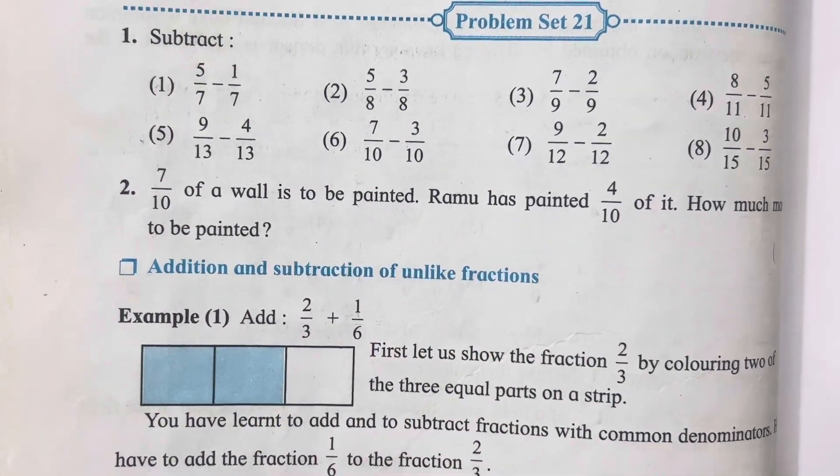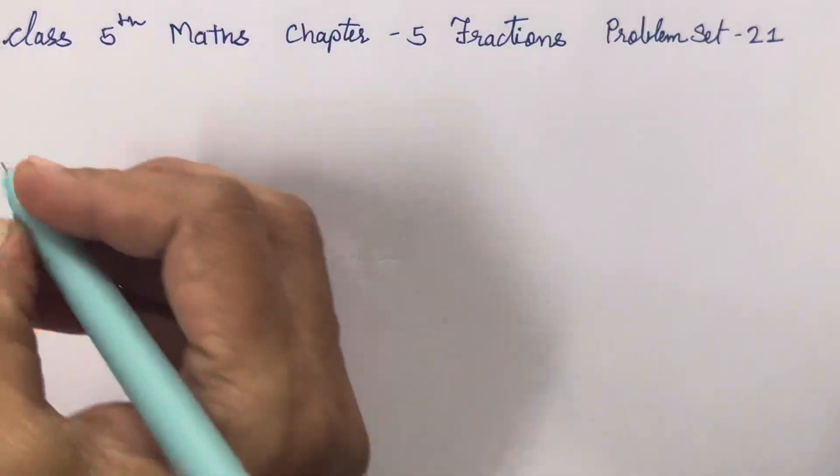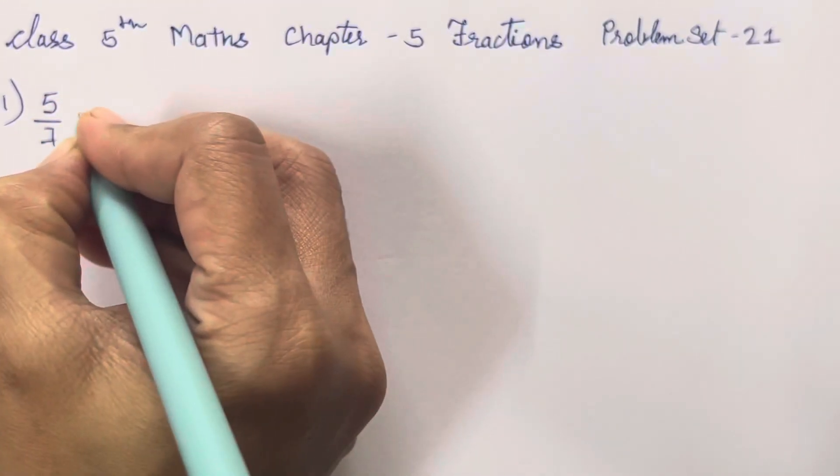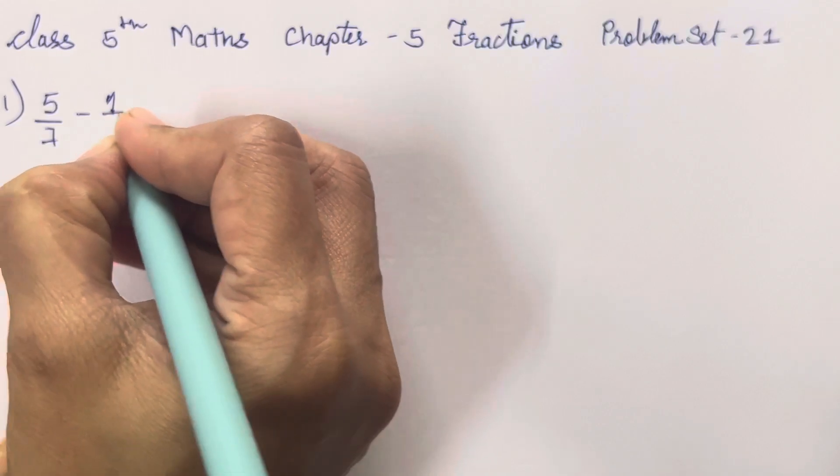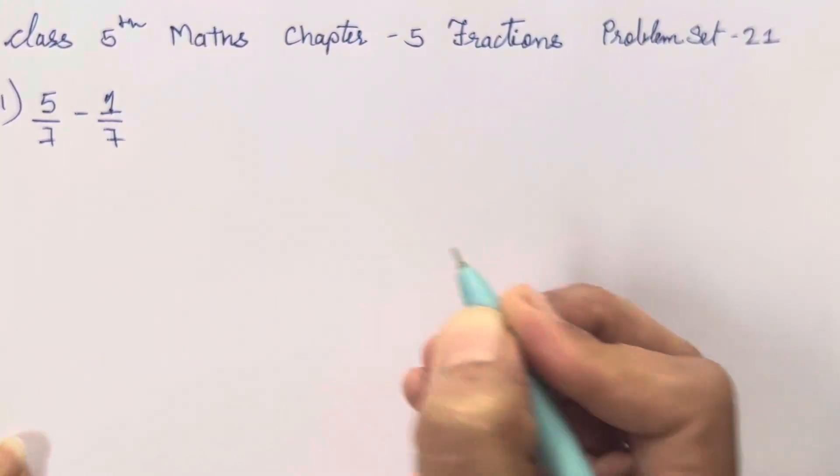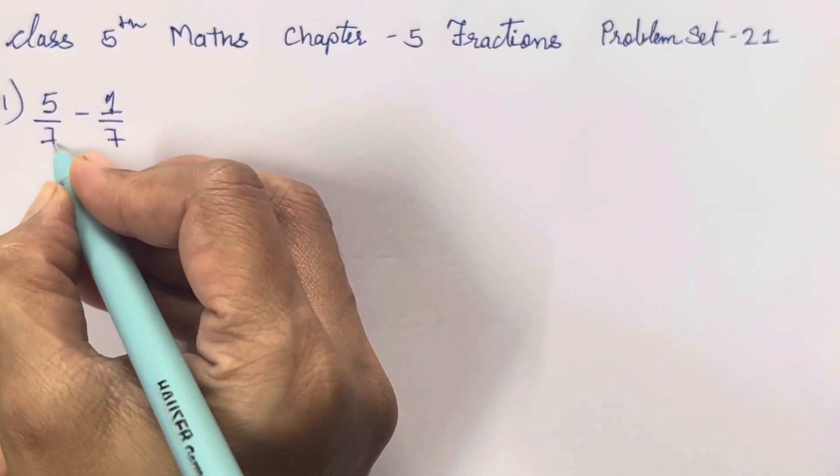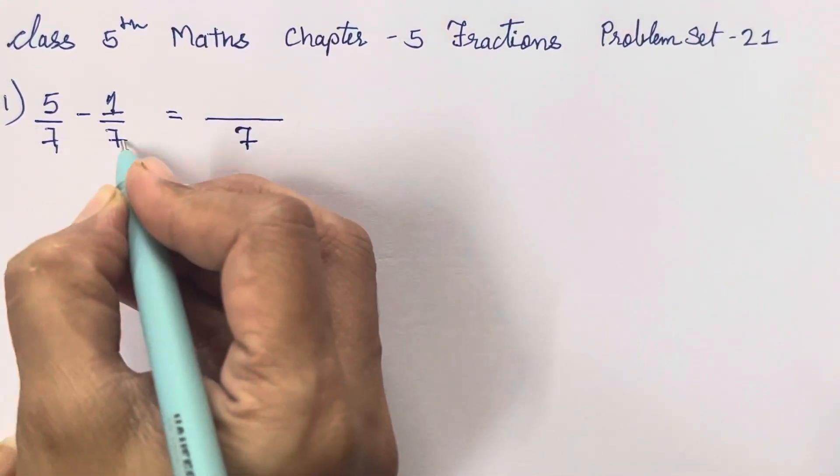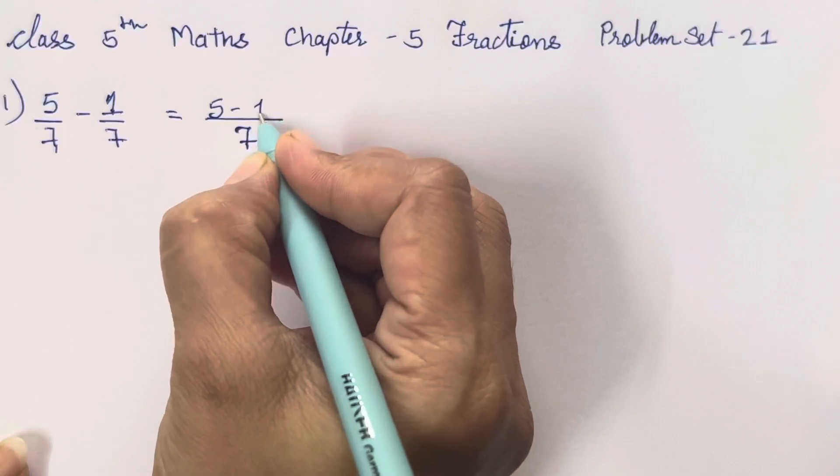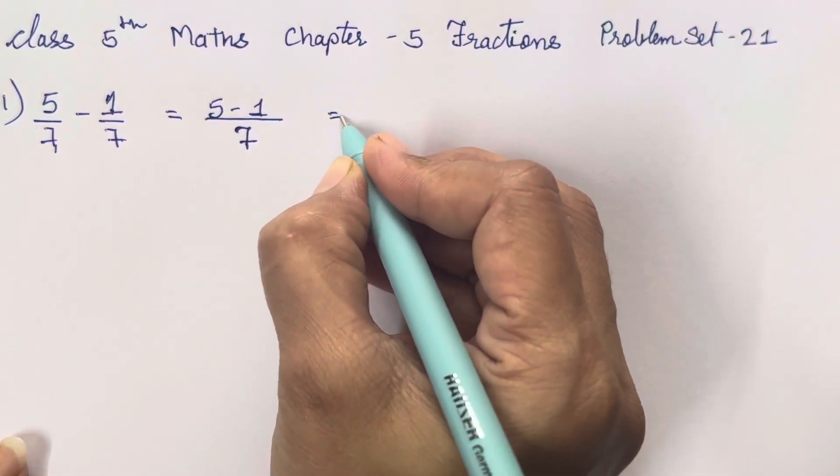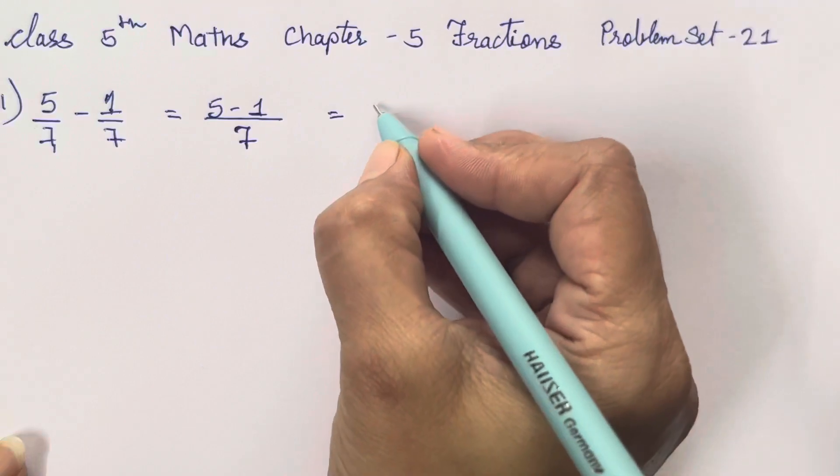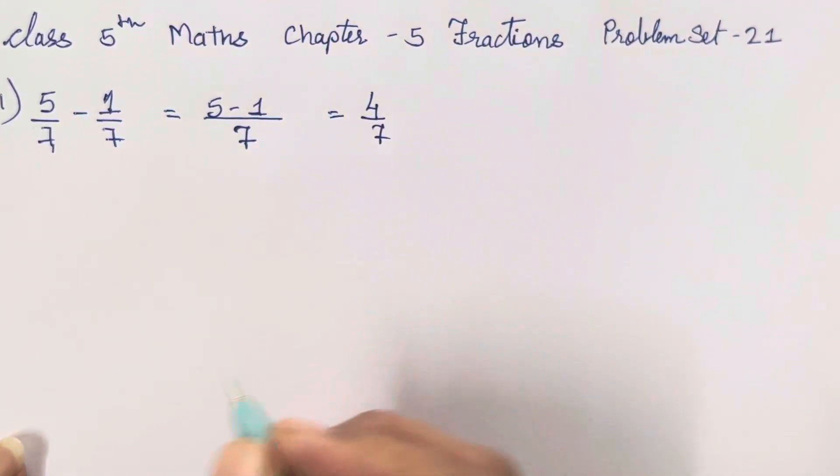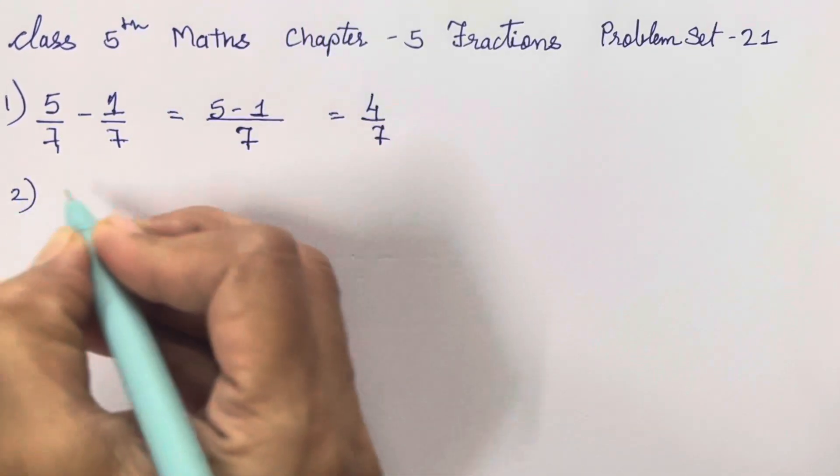If you all have followed my other videos, you will be able to understand that exactly as we have done addition, in the same pattern we have to solve the subtraction sums also. So if a sum has been given like this and when the denominators are same, we have to just write all the numbers together in this way under one line, and then 5 minus 1 is going to be 4 upon 7.